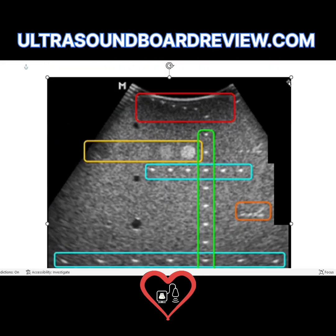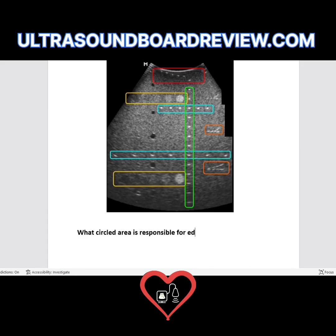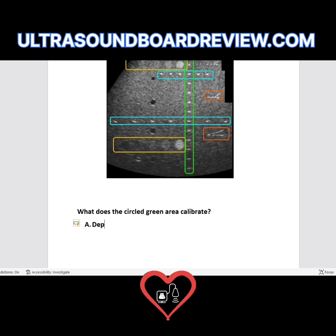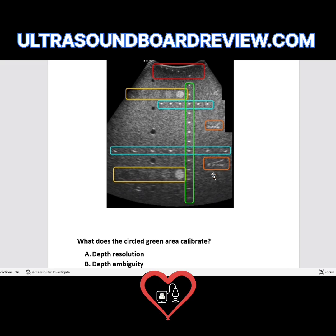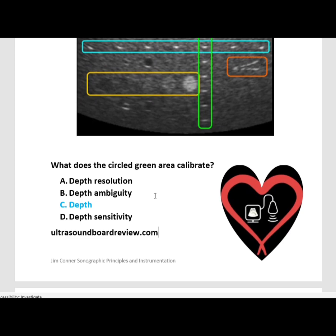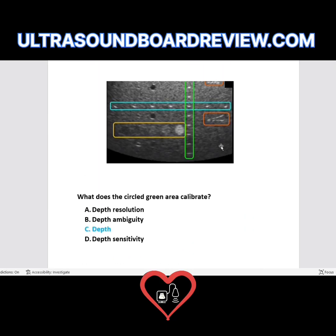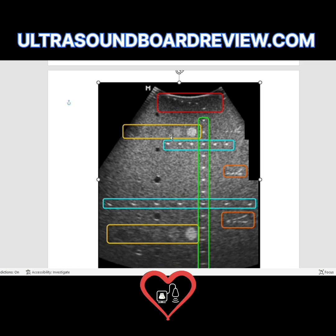On your test you could get a question like: which circled area is responsible for depth calibration — blue, green, orange, or red? The answer is green. Or they might ask what does the circled green area calibrate — depth resolution, depth ambiguity, depth, or depth sensitivity? The correct answer is C, depth. The depth resolution is orange. If they ask: when using a tissue mimicking phantom, the depth at which echoes are no longer detected is an indicator of what — the answer is sensitivity, which is the ability of the system to detect and display weak echoes uniformly. The circled area representing cysts calibrates the contrast or dynamic range.